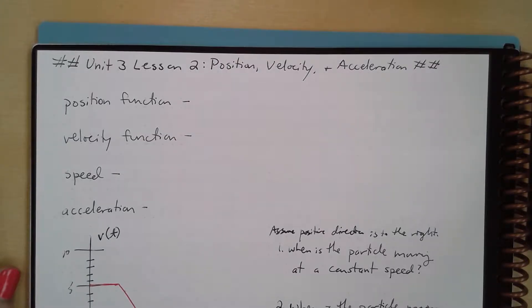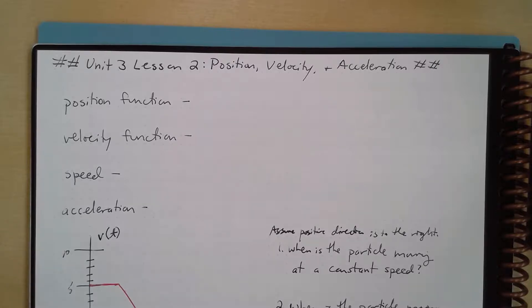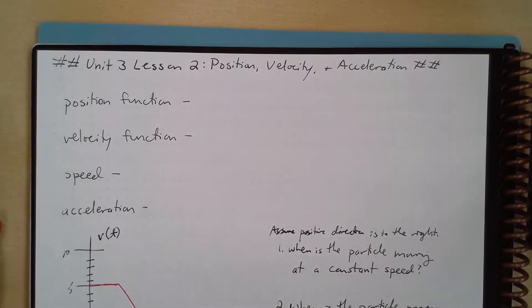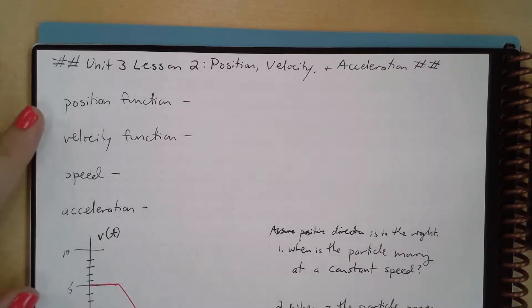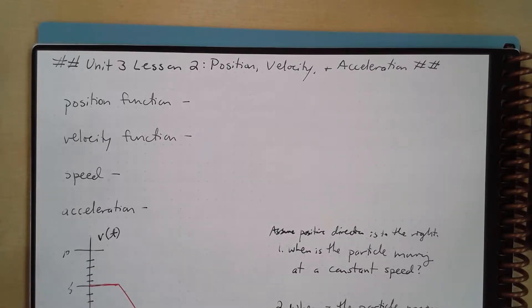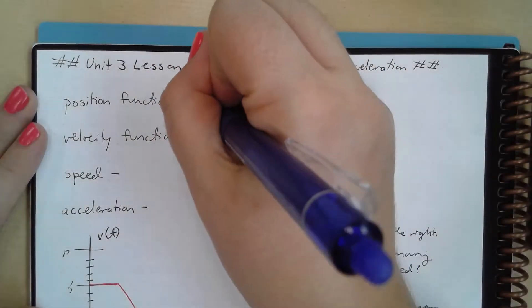Hello and welcome. Today we want to talk about position, velocity, and acceleration, and how we can use differentiation to relate to those ideas. The derivative can be used to determine the slope, but it can also be used to determine the rate of change of one variable with respect to another. When we're talking about the position function, it's usually written as s of t.